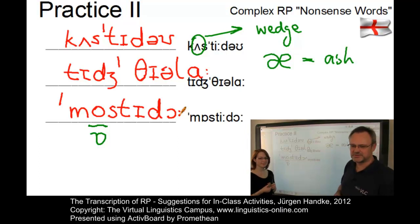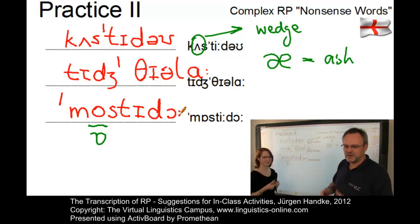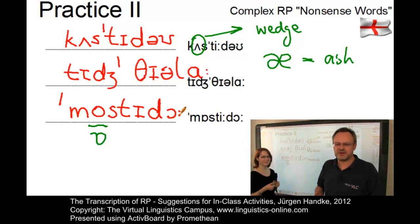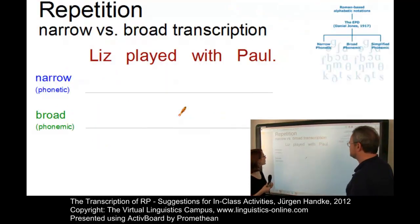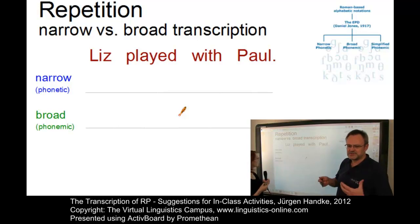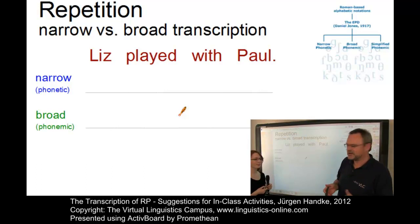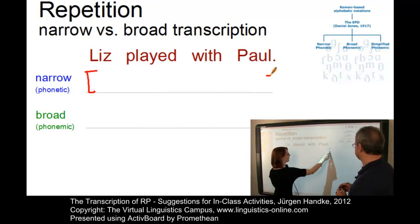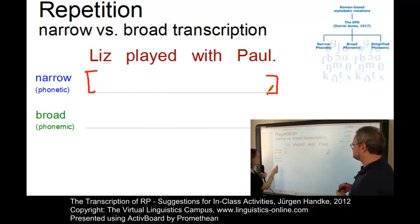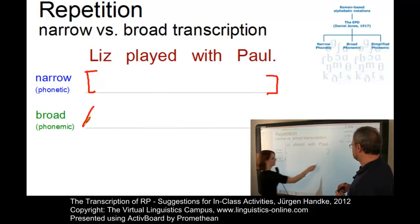Before we turn our attention to the sound system of RP, let's repeat the differences between a narrow and a broad transcription. Here is a sentence I used in the e-lecture about the phoneme: 'Liz played with Paul.' Let's transcribe this sentence in two versions — narrow and broad. Annina, how are these systems represented? In the narrow system you use angular brackets, and here we use slashes.